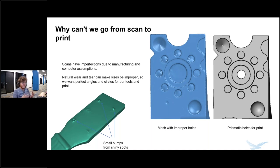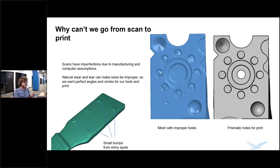How this ties into the idea of rapid prototyping is we don't want to send something to a printer and have it turn out wrong right off the bat. We want to make sure that we have some kind of smart information in it so we can adjust it later on.